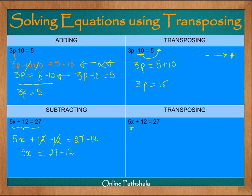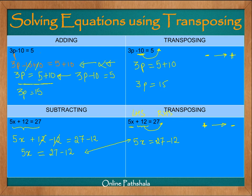Now using transposition: we have 5x plus 12 equals 27. We transpose this plus 12 from the left hand side to the right hand side, and the sign changes from plus to minus. So we get 5x equals 27 minus 12, which is 5x equals 15. We get the same result as the conventional method, but with one fewer step.